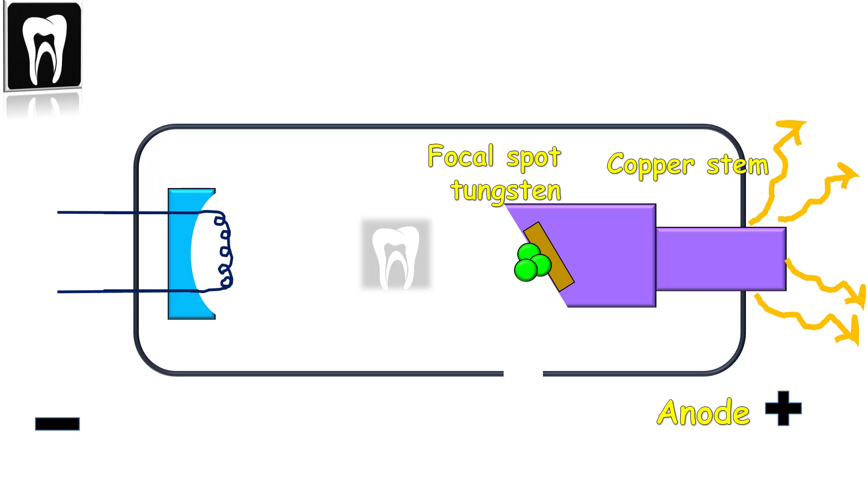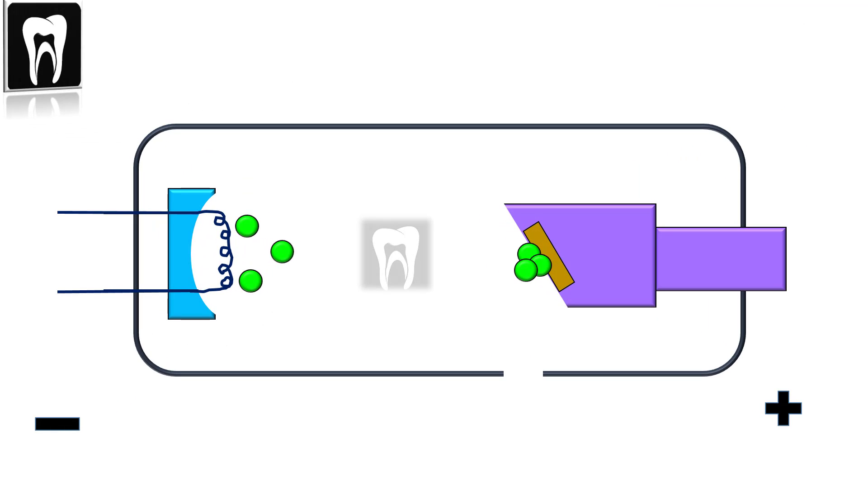The negative electrons coming from the cathode with high energy are focused on and absorbed by the anode. This is the target that converts electron energy to X-ray photons. The area where electrons are focused and X-rays are created is called the focal spot.